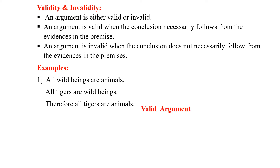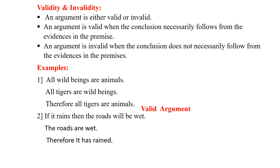Second example: If it rains, then the roads will be wet. The roads are wet. Therefore, it has rained. Here the conclusion 'it has rained' does not necessarily follow from the premises, because the second premise 'the roads are wet' may be due to several other reasons — such as leakage of a water pipe, etc. So this argument is invalid.